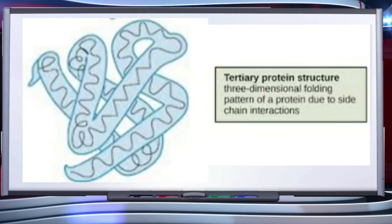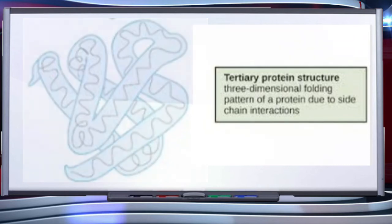The long protein chain is also folded upon itself like a hollow woolen ball, as shown in this figure, giving rise to the tertiary structure of the protein. This gives us a three-dimensional view of a protein. Tertiary structure is absolutely necessary for many biological activities of proteins.